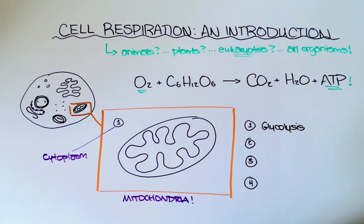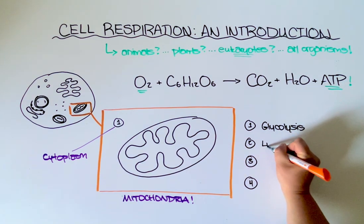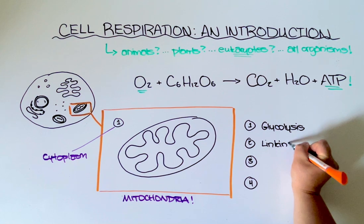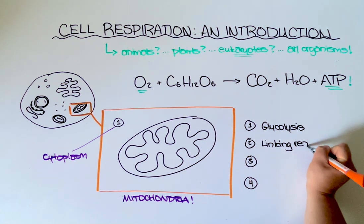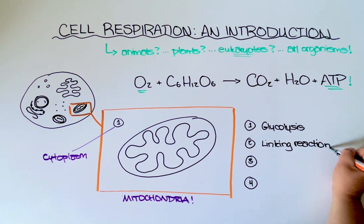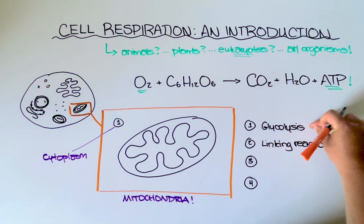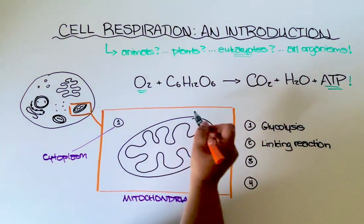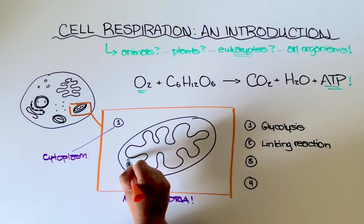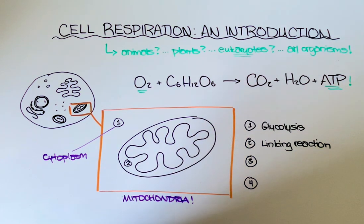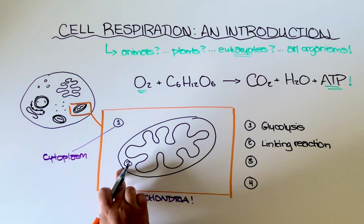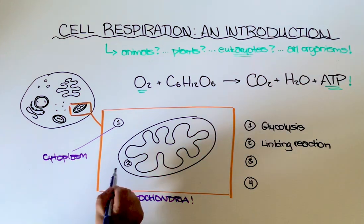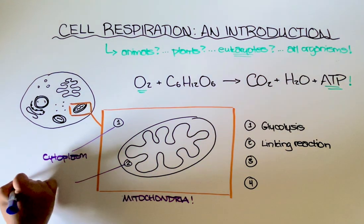Glycolysis creates a molecule called pyruvate, which then is used to fuel the next reaction, called the linking reaction. And the linking reaction takes the pyruvate molecule made from glycolysis and modifies it further. And that takes place here in the mitochondria, but not all the way in the middle. It takes place in between the outer and inner membrane in a location called the intermembrane space.